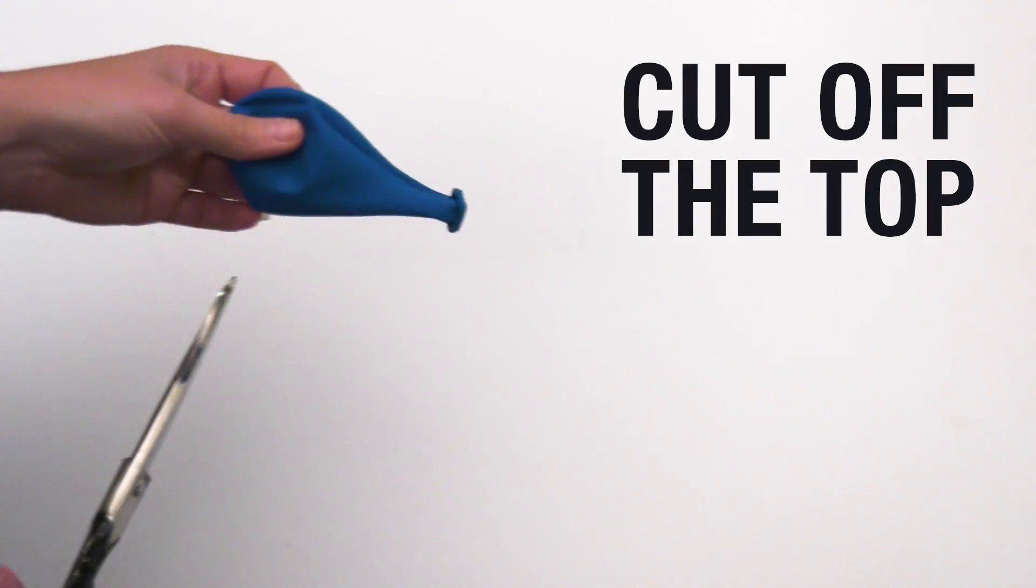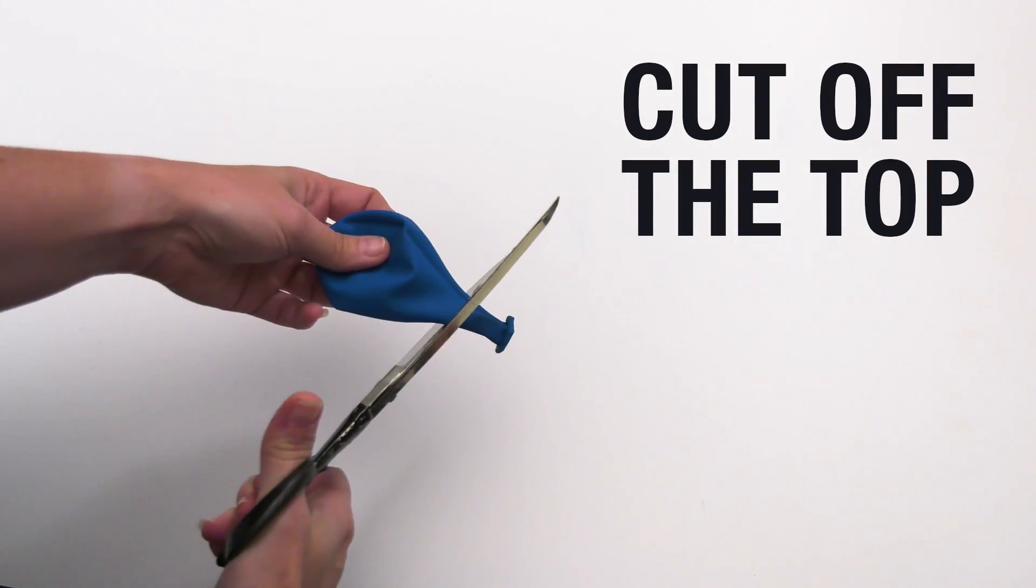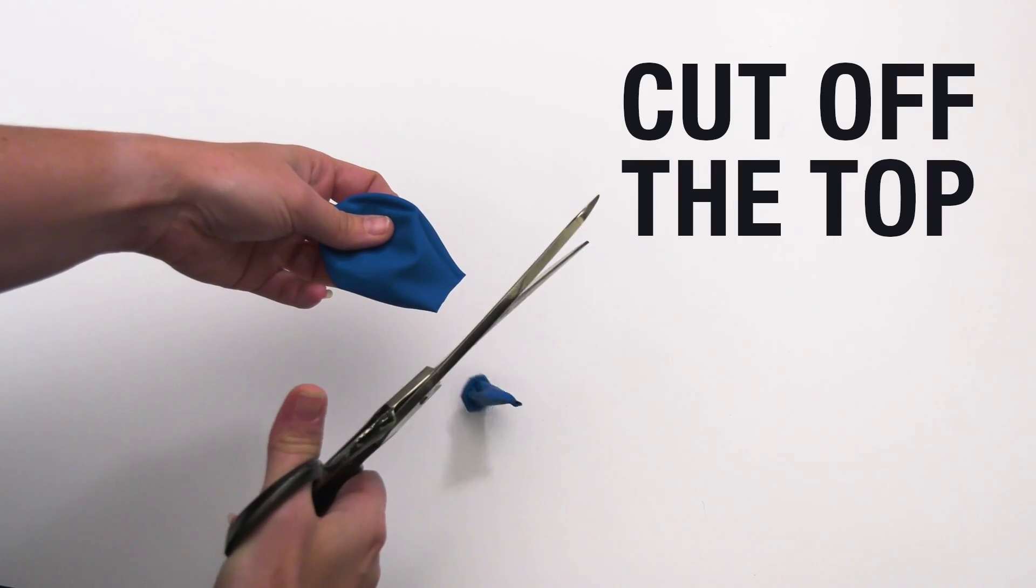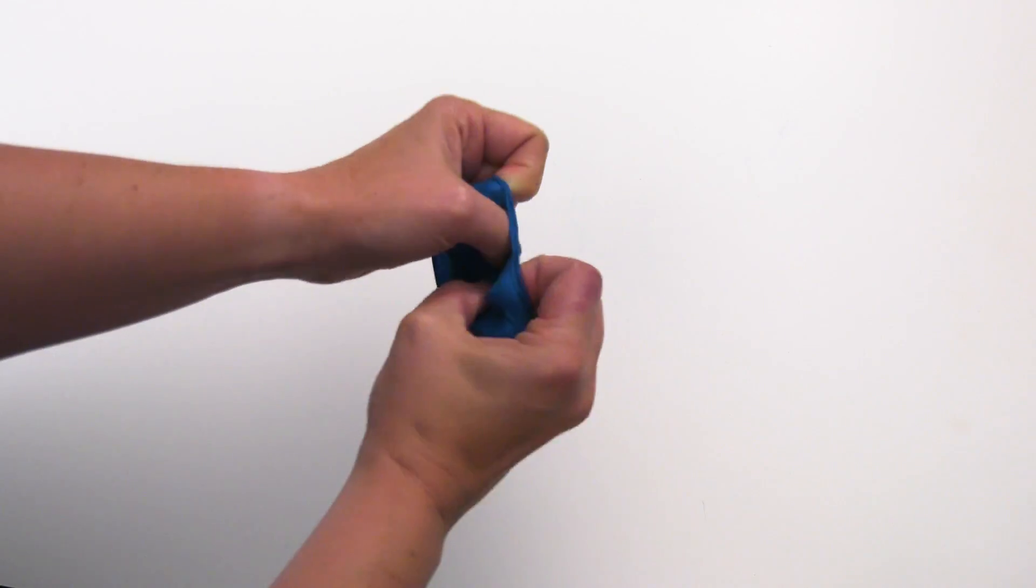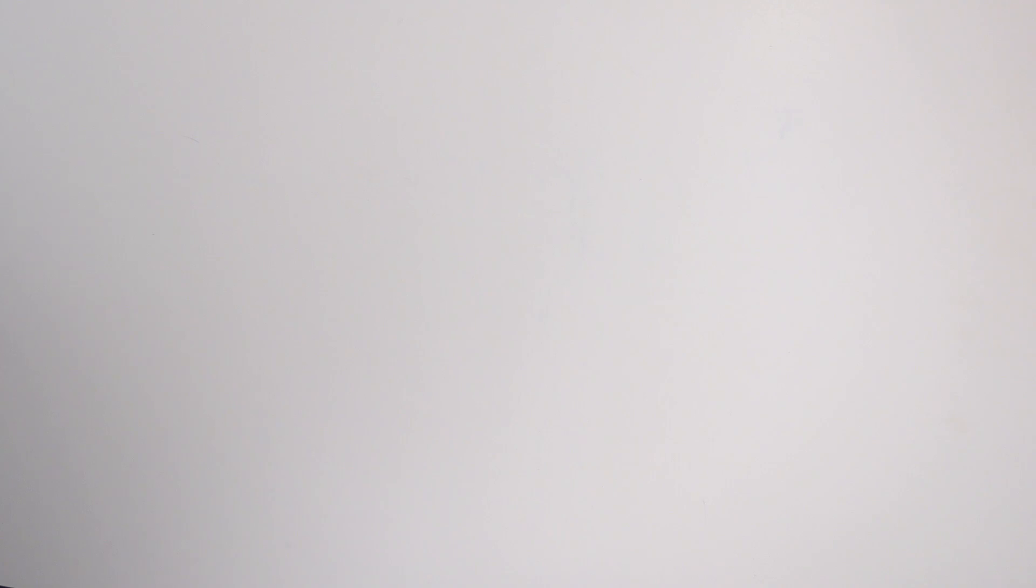To start, take a large balloon and cut off its neck. This is to make the opening larger and allow the balloon to be stretched more easily over the PVC pipe.